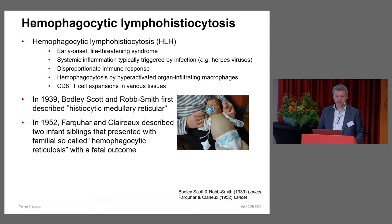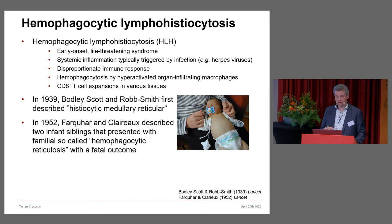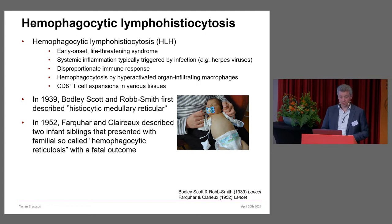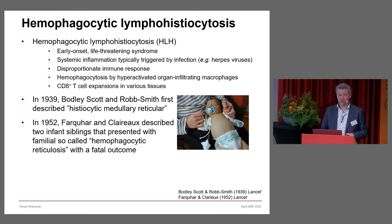HLH is characterized by systemic inflammation, typically triggered by infections, and EBV is one such major infection. It's a disproportionate immune response where one has some parts of the immune system working, but not the CD8 T cell killing. One sees haemophagocytosis by hyperactivated organ-infiltrating macrophages and large CD8 T cell expansions. This clinical phenotype was first described in 1939 by Bodley Scott and Rob Smith as histiocytic medullary reticular disease. In 1952, two Scottish clinicians, Farquhar and Cloreau, described two infant siblings presenting with this syndrome with a fatal outcome, highlighting a potential genetic linkage.